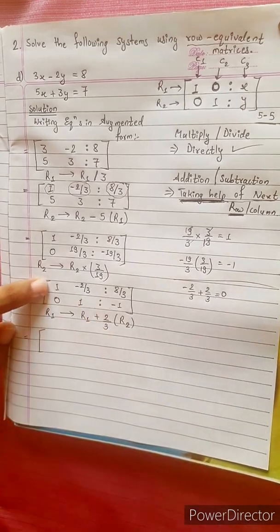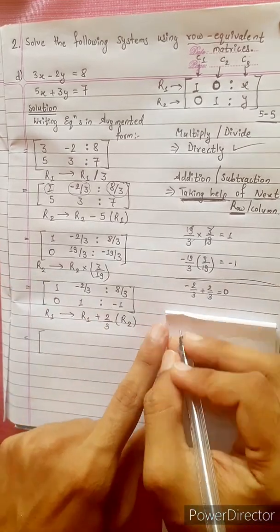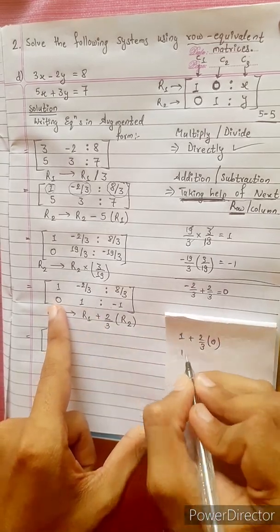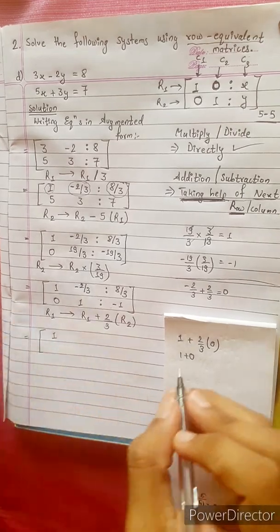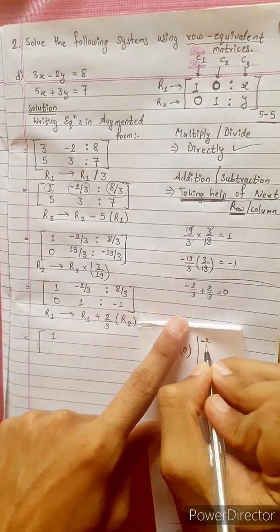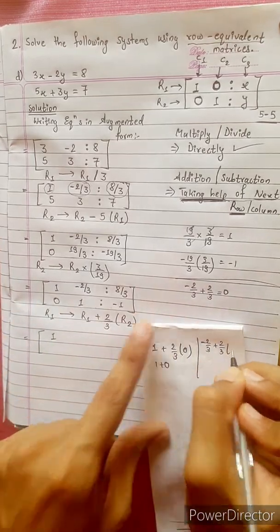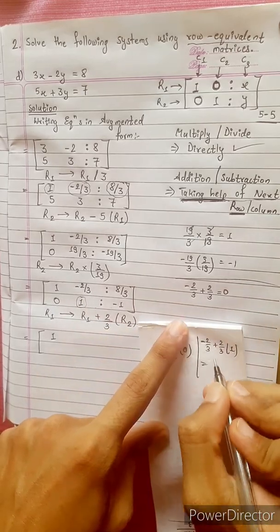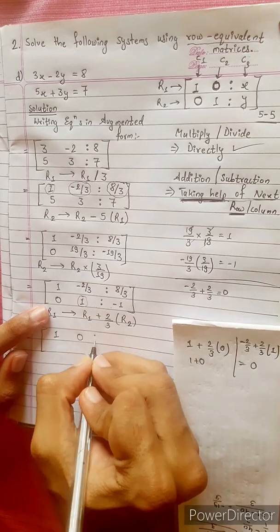1 plus 2 by 3 times R2, 0. 1 plus 0, 1. Minus 2 by 3 plus 2 by 3 times R2. R2 equal to 1. 0 is 2.